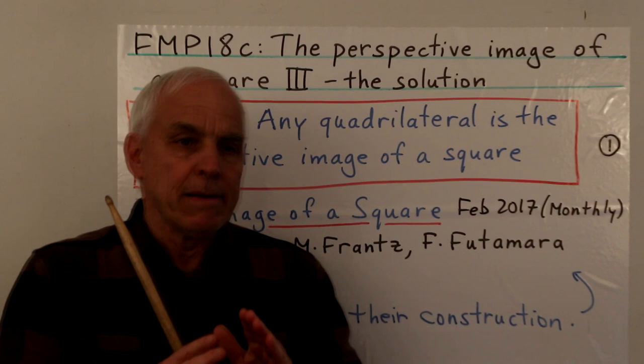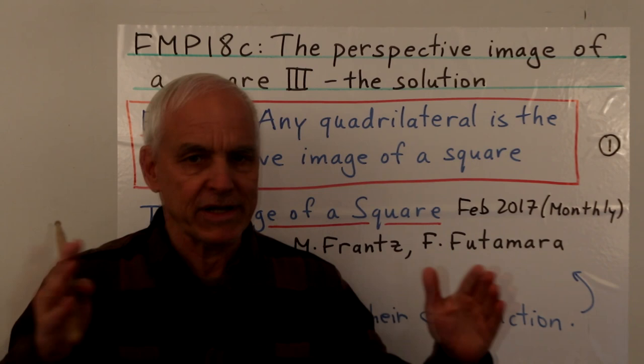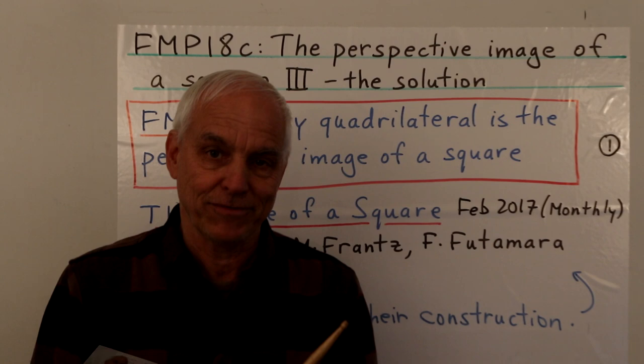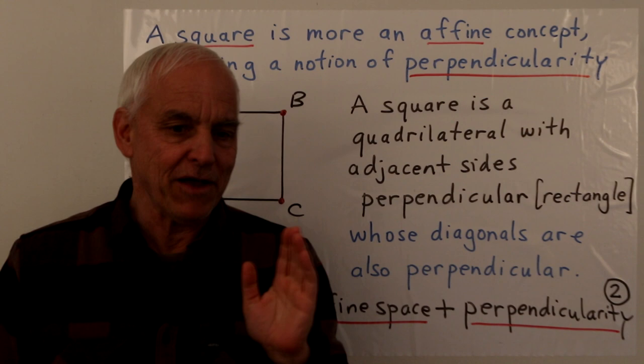We're going to be following their construction. At the end of the video I'm going to point out an important additional direction that we should think about, so the problem is not going to end exactly here. There are going to be some important issues to touch base with that I think will be of quite general interest. The problem involves not only the notion of perspectivity but also the idea of the square.